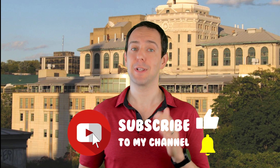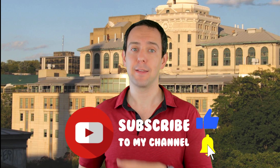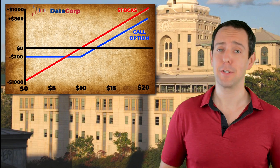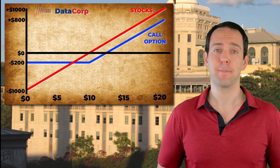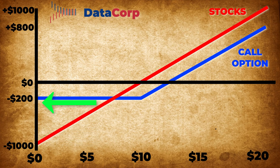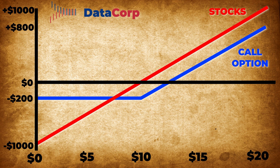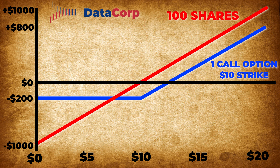We now know everything we need to know to properly compare stocks to options. If you could take a moment to like this video, subscribe to this channel, and click that little bell icon so that you don't miss out on any new content, I'd really appreciate it. With that said, let's look at this terrible chart and see what it says. This chart is plotting out the profit or loss when comparing buying stocks to buying call options — specifically comparing either buying a call option or buying the comparable amount of shares of the underlying stock, typically 100 shares.